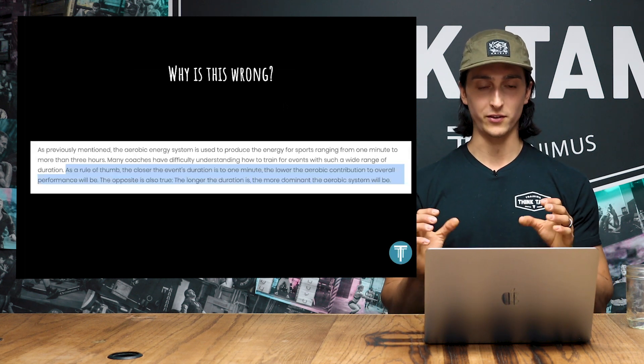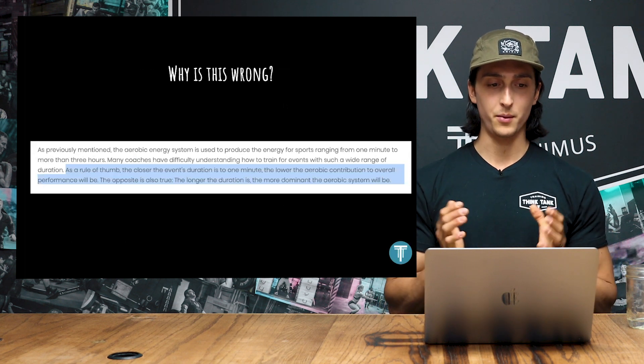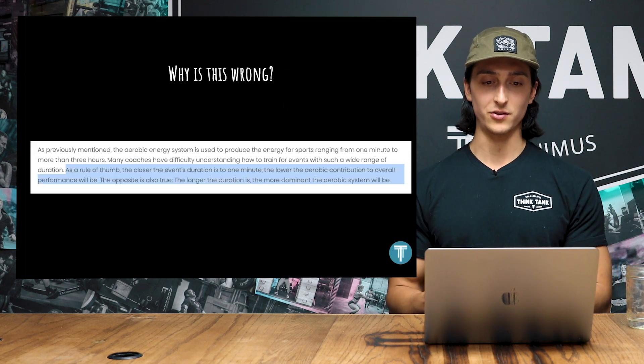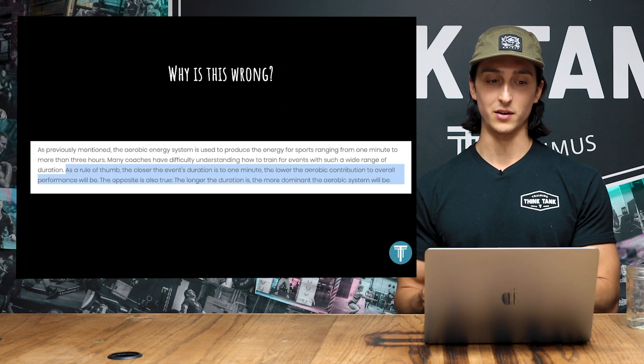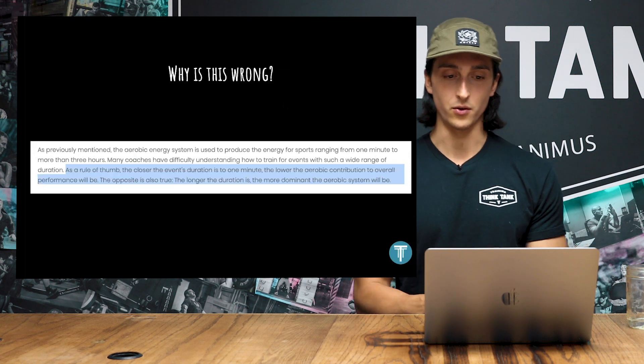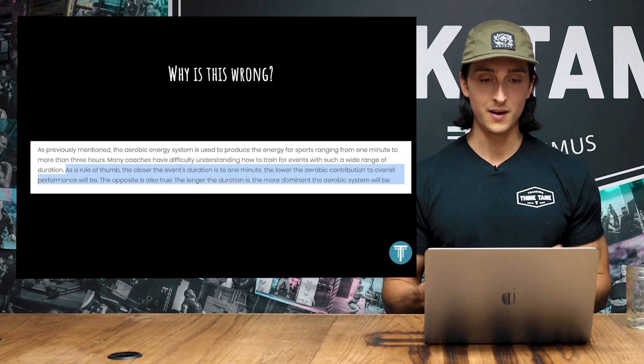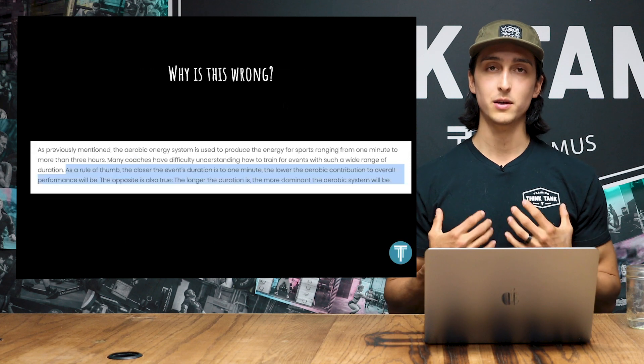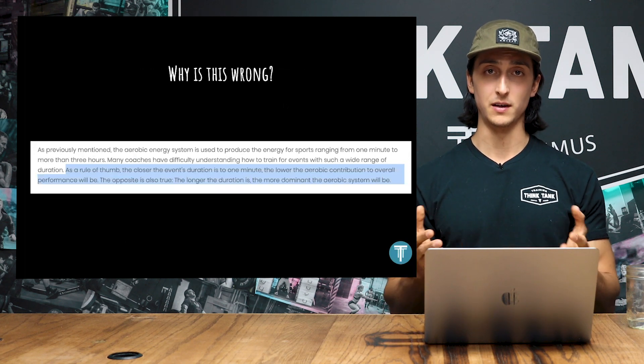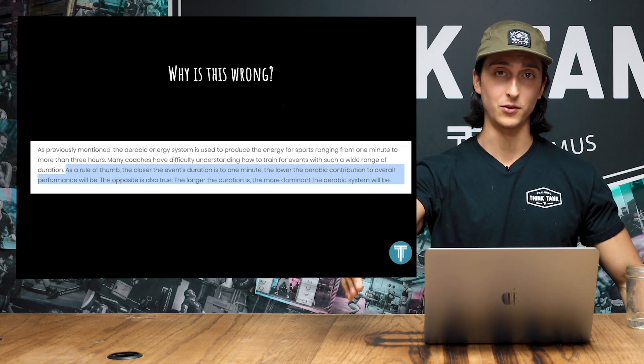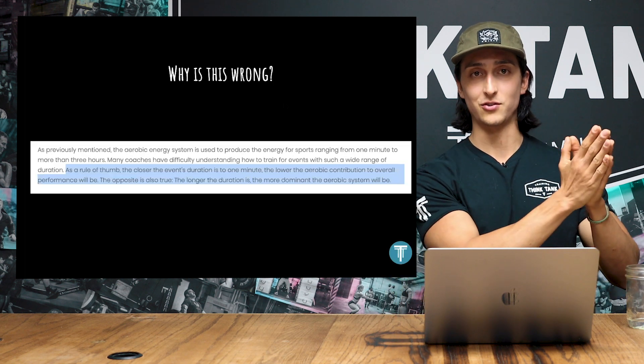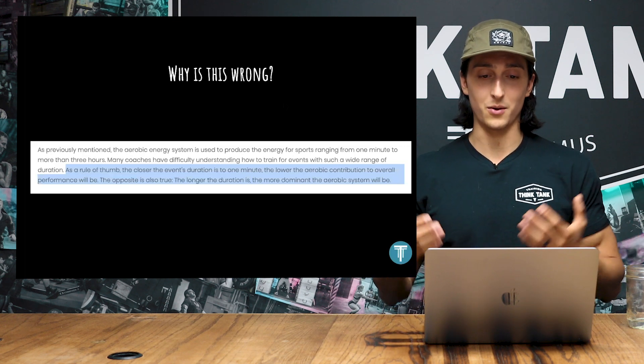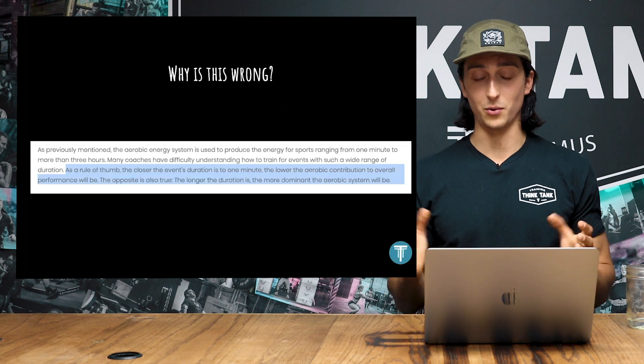So if we understand this science, we could start to pick apart statements like these. The statement that we have on this chart, and this is from an energy system training course, is as a rule of thumb, the closer the event's duration is to one minute, the lower the aerobic contribution to overall performance will be. The opposite is also true. The longer the duration, the more dominant the aerobic system will be. Man, if someone's teaching this and they have that much confidence in it, how could you truly say this if all the scientific evidence points in the other direction? If I pop a Moxie monitor on you and I have you just sprint as hard as you can until you throw up on yourself in 30 seconds, we're going to see oxygen completely bottom out in the muscle. So statements like this you could clearly call bullshit because we could observe these things in the gym. We're not talking about these theoretical models. We're talking about things that we could easily watch happening.